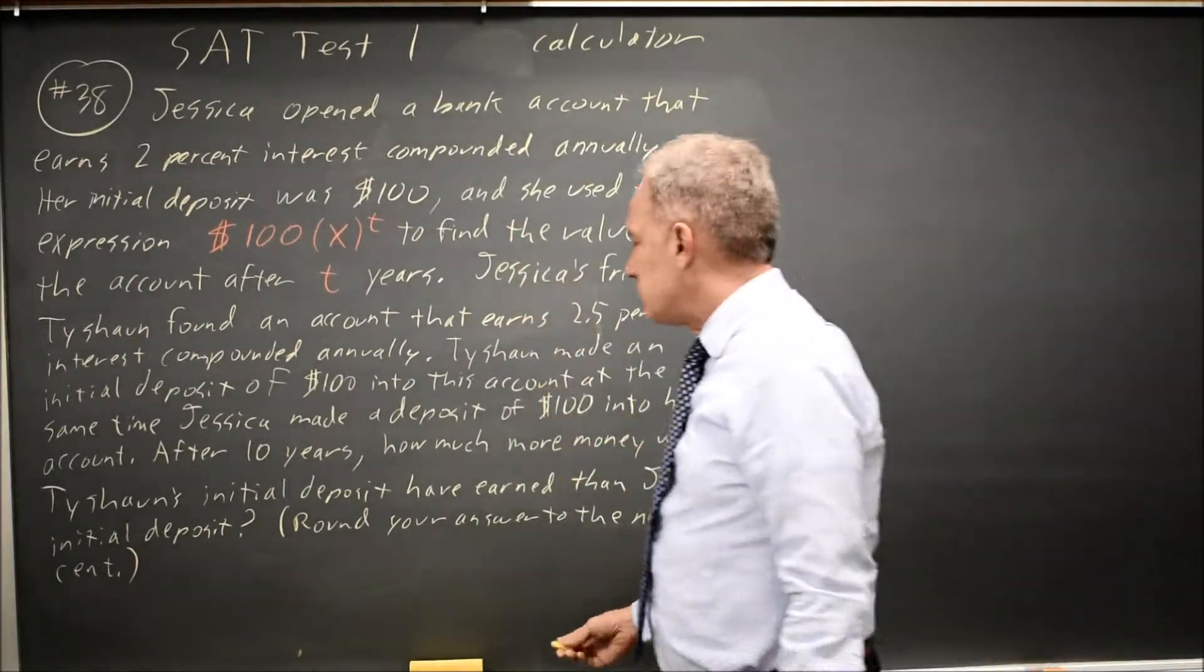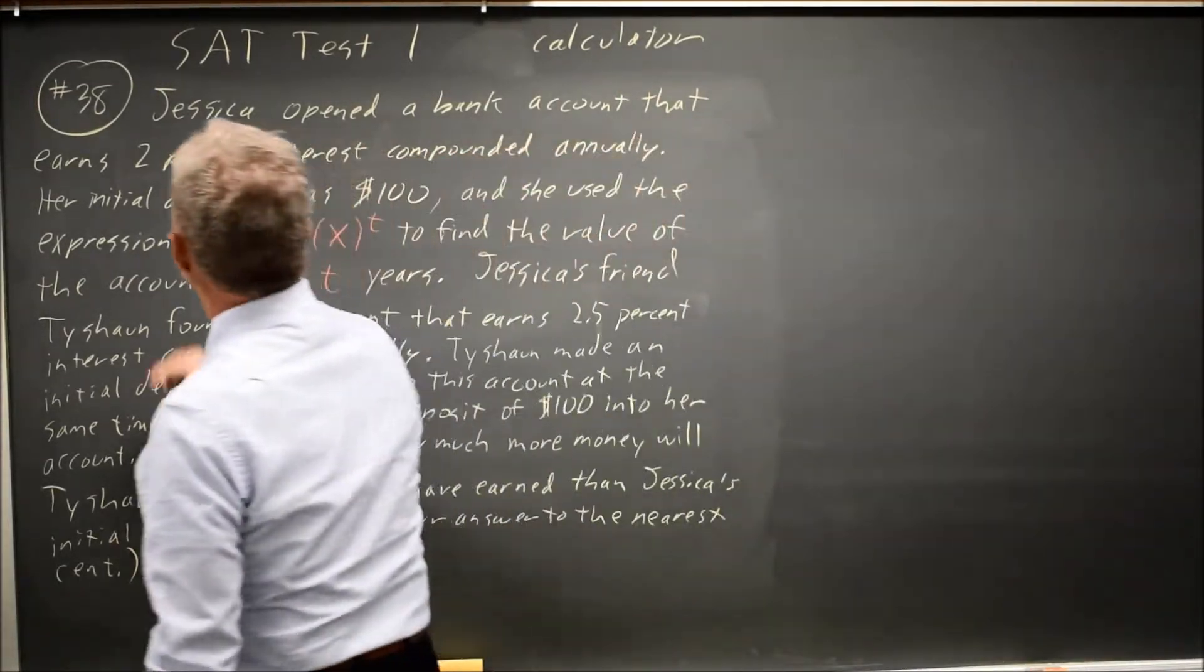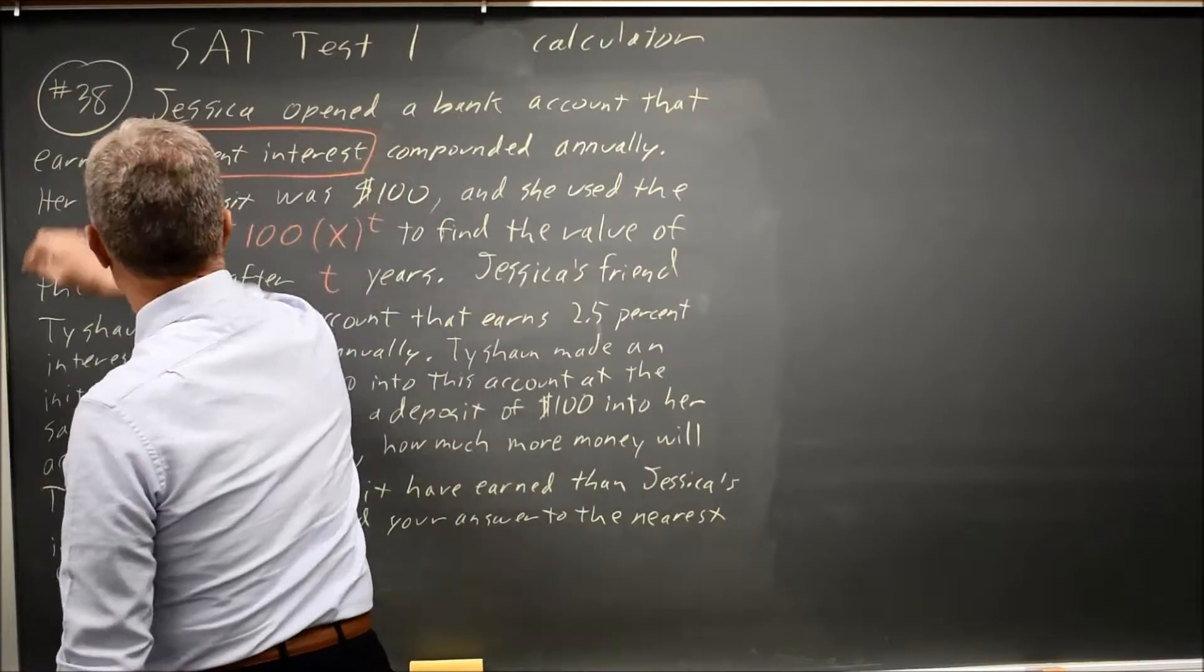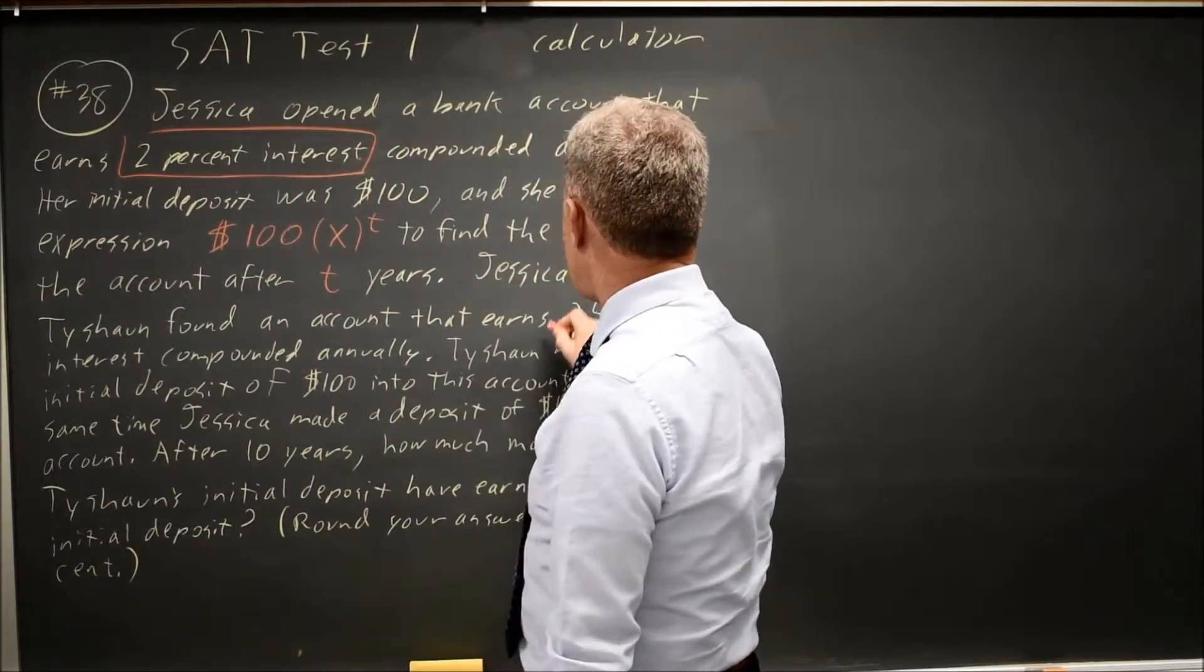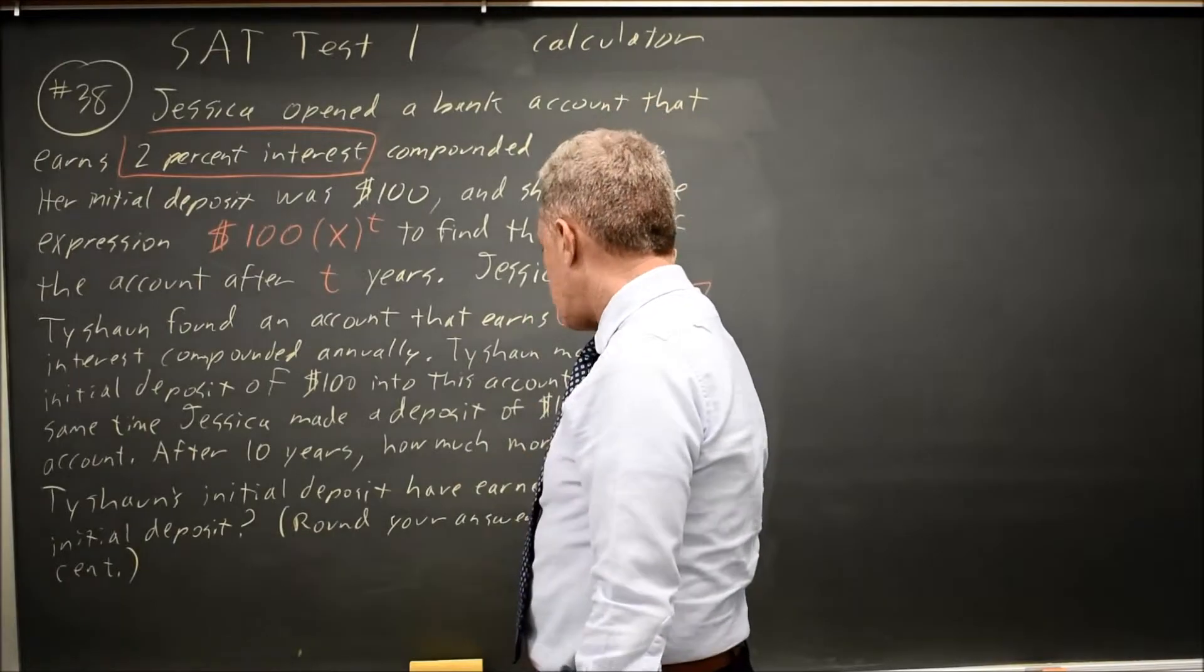Jessica's account grows at 2% interest, starting with $100. And Tyshawn's account grows at 2.5% interest, also starting with $100.